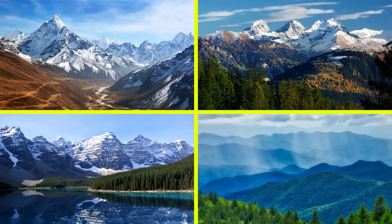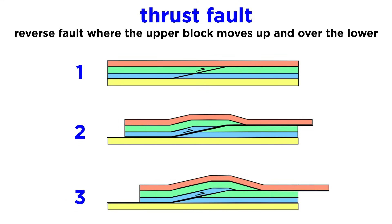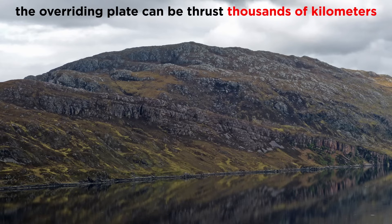The most striking folded rocks are found in areas that have experienced the collision of two plates, such as the Himalayas, Alps, Rockies, and Appalachians. Large reverse faults called thrust faults are found in these locations. In some cases, the overriding plate can be thrust hundreds to thousands of kilometers over the plate it is colliding with.